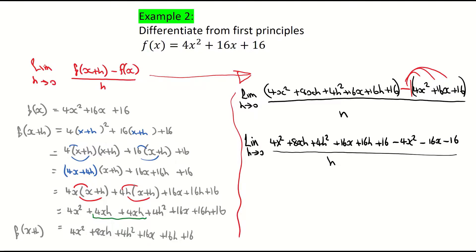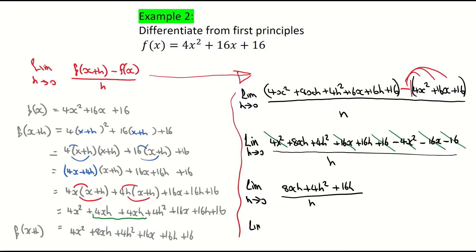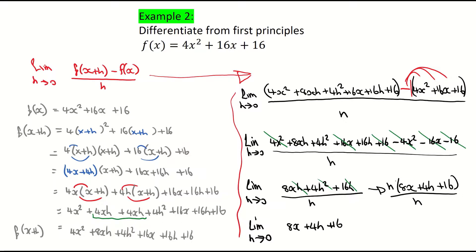Now let's see which terms cancel. 4x squared minus 4x squared cancels. 16x minus 16x cancels. Positive 16 minus 16 cancels. That leaves the limit as h approaches 0 of 8xh plus 4h squared plus 16h, all divided by h. Dividing through by h — or factoring out h from the numerator — h cancels with each term, leaving 8x plus 4h plus 16.